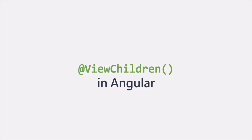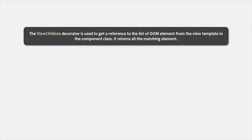Now in this lecture, we are going to understand the ViewChildren decorator. ViewChildren is just like ViewChild — it is also used to get a reference to a DOM element. But ViewChildren returns a list of DOM elements from the view template which match the selector. It will return all the matching elements, whereas ViewChild only returns the first occurrence.